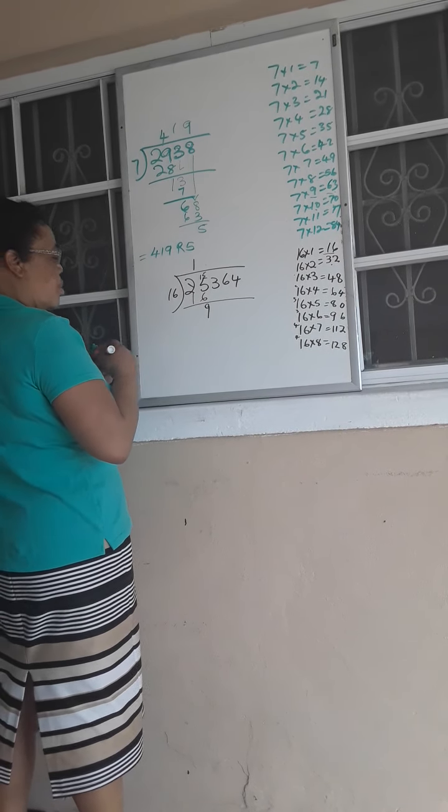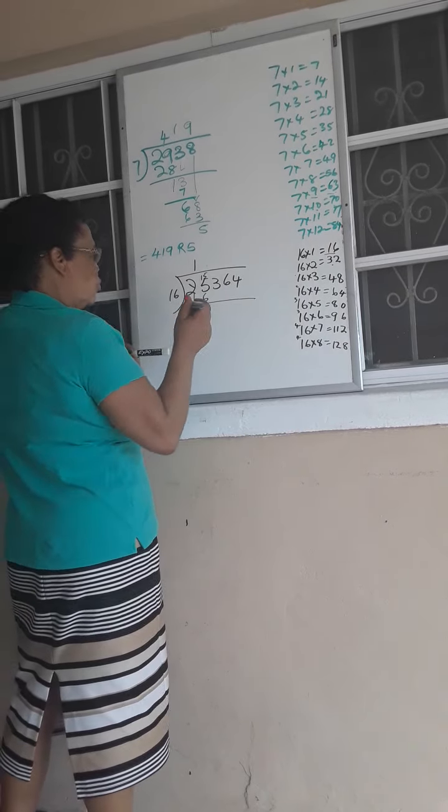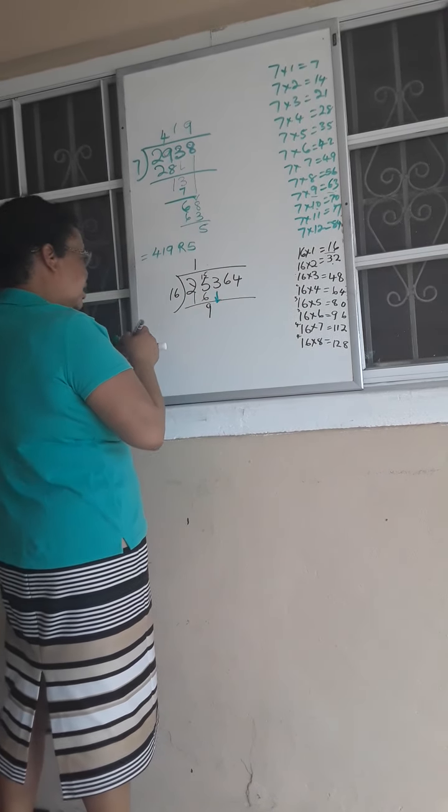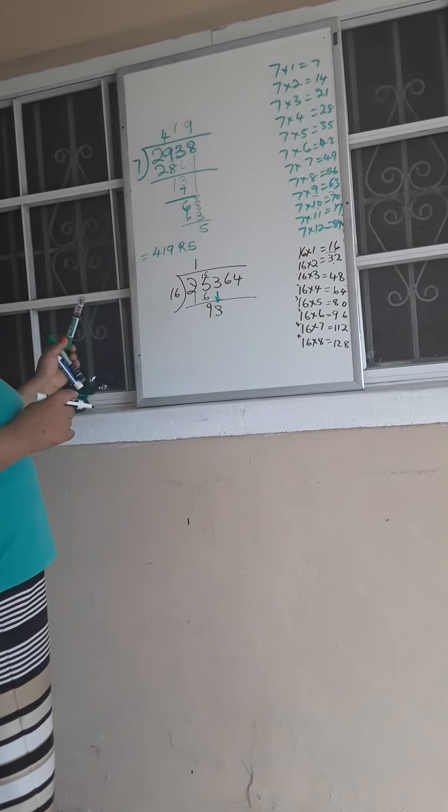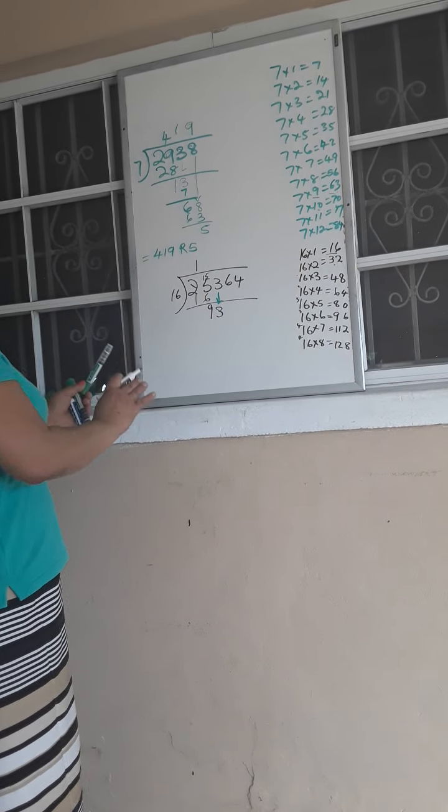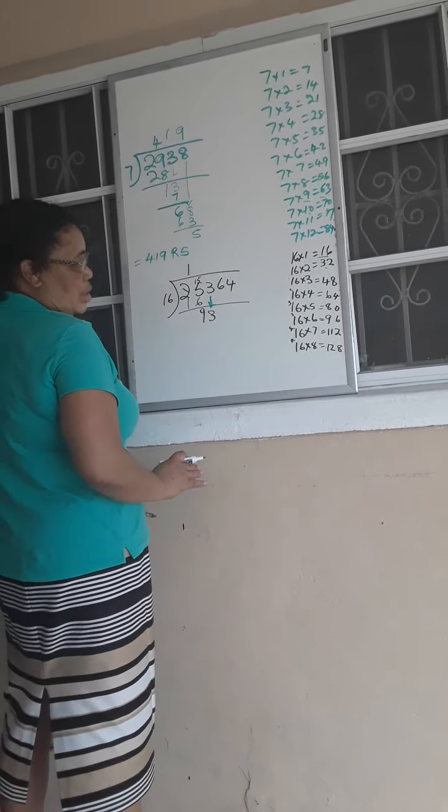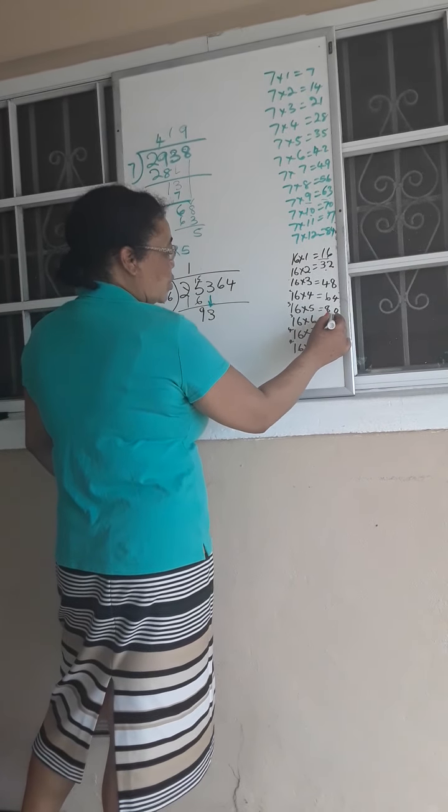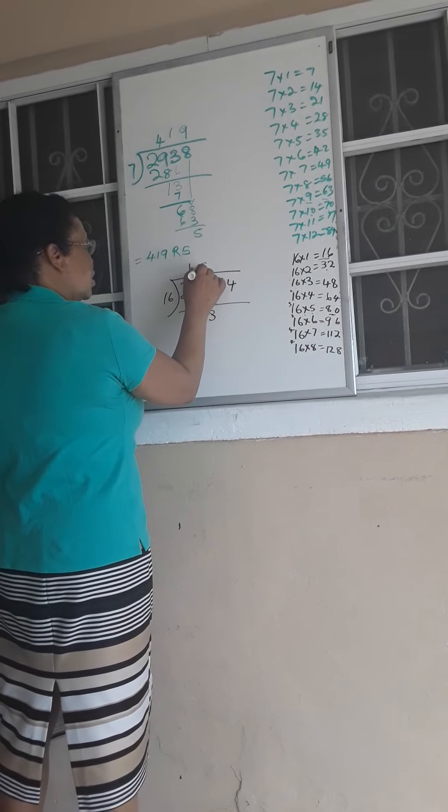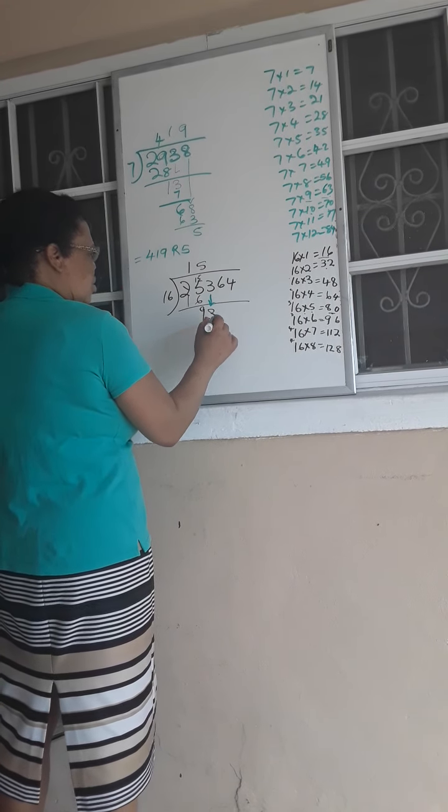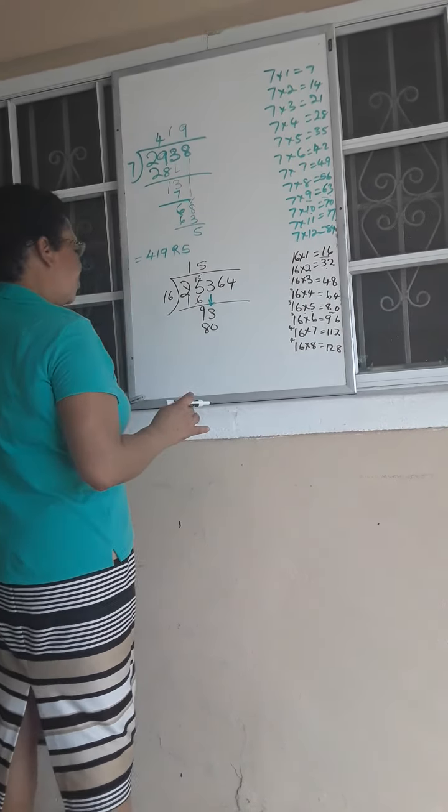Now I'm going to bring down my 3. Bring down this 3, and this becomes 93. So I go, how many times can I get 16 out of 93? Right here, I notice I can stop right here. 16 times 5 is going to give me 80. I couldn't go to 6 because I would end up with 96.